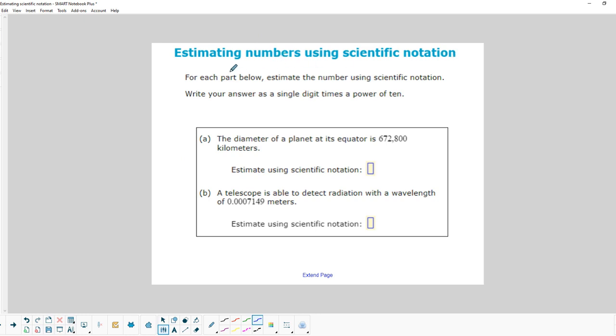So estimate numbers using scientific notation. For each part below, estimate the number using scientific notation. Write your answer as a single digit times a power of 10. In this case, we are going to round to the 100 thousandths column because we only want one digit left. So if we look at 672,800, this 7 is going to cause this 6 to round up to 7. Then we're going to write the rest of it using scientific notation. That's times 10 to the 1, 2, 3, 4, 5th power. So we're just taking a number, rounding it, and then writing it in scientific notation.